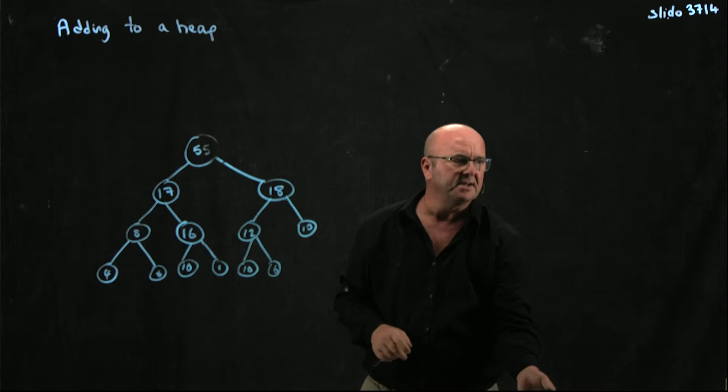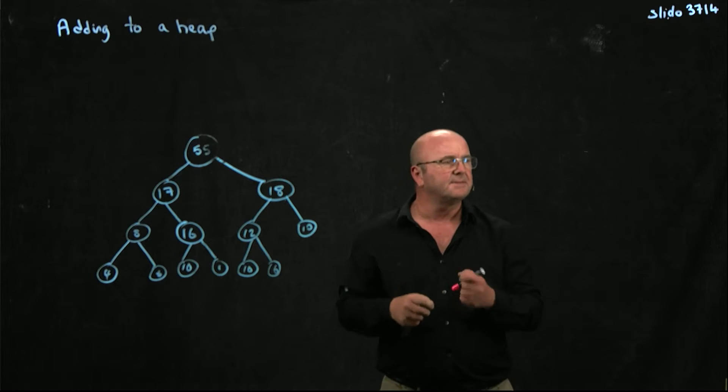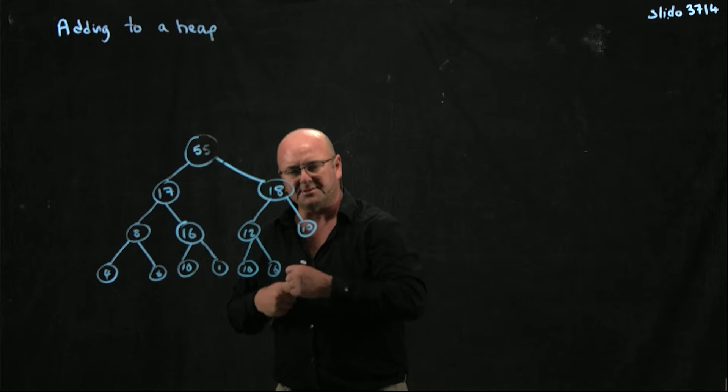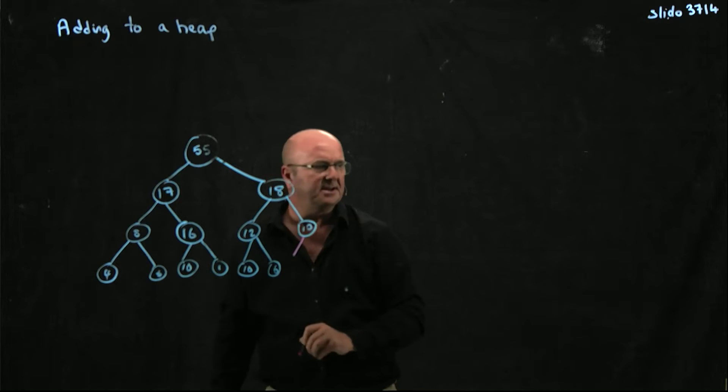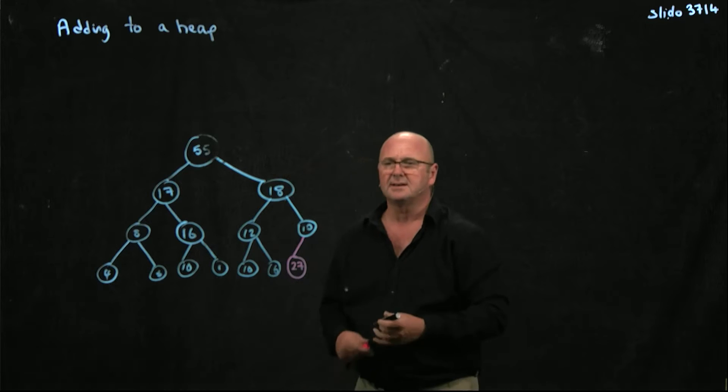So if I want to add something to that heap, I'm going to add it to the next available space in the heap. And in this case, the next available space will be down here. So if I'm going to add a 27, I add it right there.